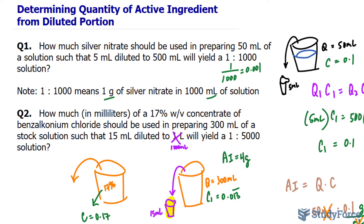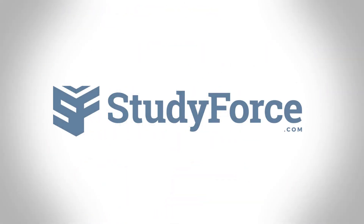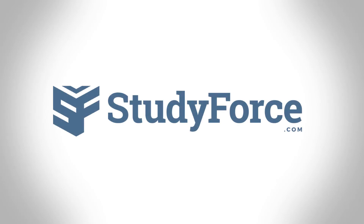And there you have it — that is how to determine the quantity of active ingredient from a diluted portion.